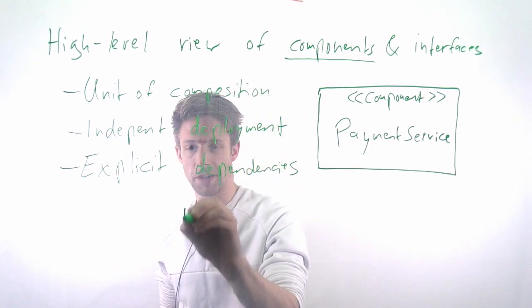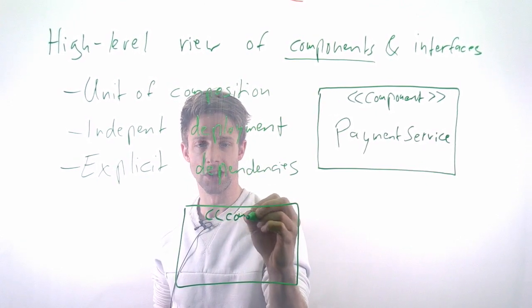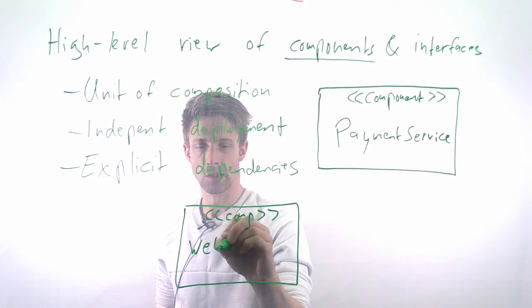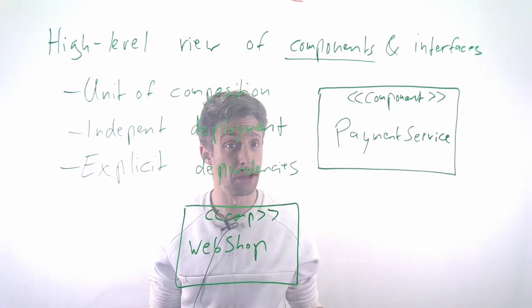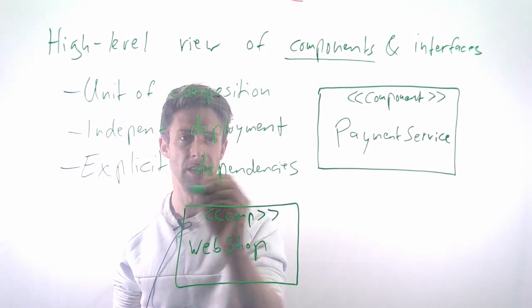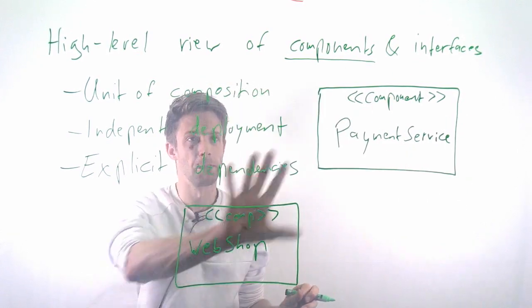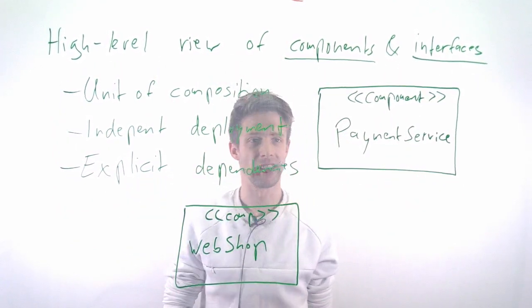Then I have another component. I'll just write comp here to keep it short. This is my webshop, and this one is also independent. I can deploy it, so I could put this on one machine and this on another machine.